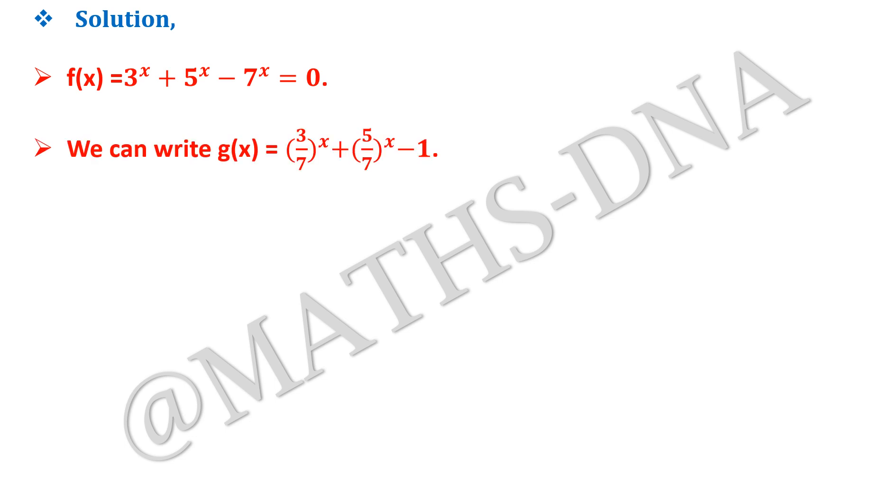From here we can get g of x that is equal to 3 by 7 raised to x plus 5 by 7 raised to x minus 1. Now as we apply the limit,